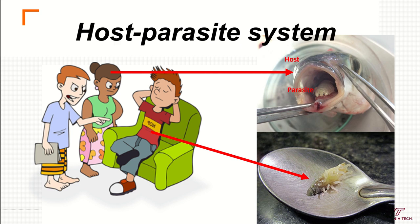So we have here a host-parasite system. This parasite eats the tongue of the fish and lives in the space where the tongue should be, taking the resources of the fish when the fish eats.